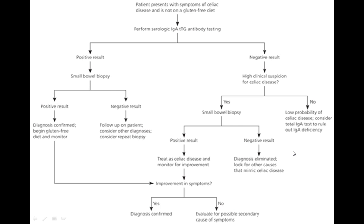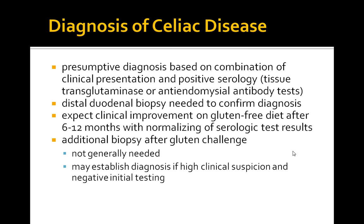This algorithm gives an overview of how to approach patients with celiac disease. For diagnosis, the presumptive diagnosis is based on a combination of clinical presentation and positive serology for tissue transglutaminase or anti-endomysial antibody tests. Distal duodenal biopsies are needed to confirm the diagnosis. Expect clinical improvement on a gluten-free diet after 6 to 12 months, with normalizing of serologic test results. Additional biopsies after gluten challenge are generally not needed, but may establish diagnosis if high clinical suspicion is warranted and initial testing is negative.